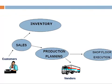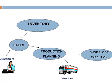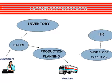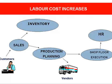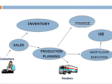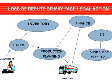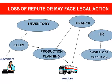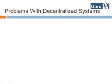Once the raw material is available, the shop floor department suddenly realizes they are short of workers. They approach the HR, who in turn hire temporary employees at higher than market rates. Thus, labor cost increases. The production planning department fails to update the finance department on the materials they have purchased. The finance department defaults the payment deadline set by the vendor, causing the company loss of its reputation and even inviting possible legal action. These are just a few of the many problems with decentralized systems.